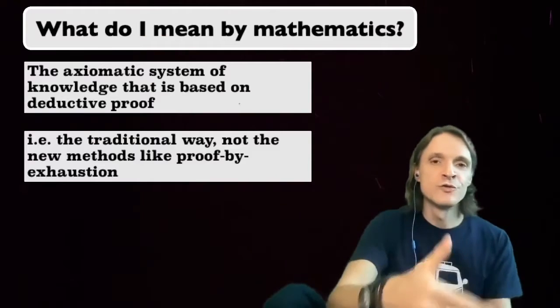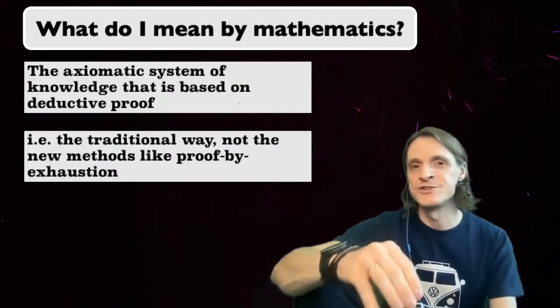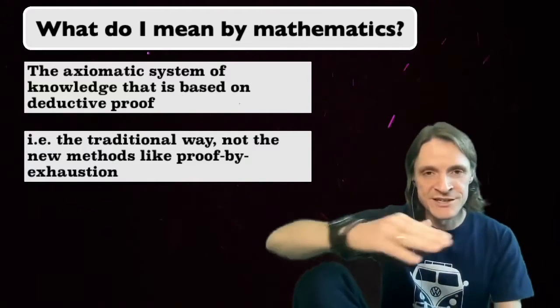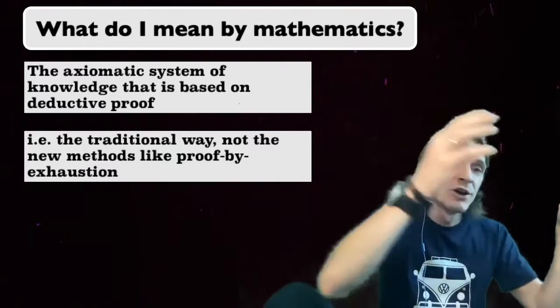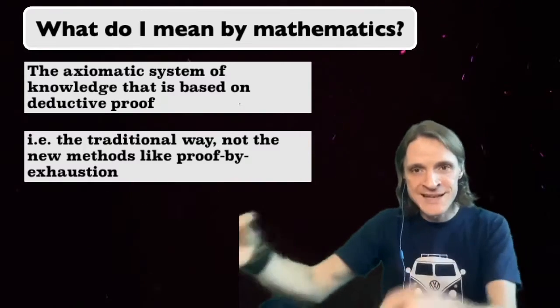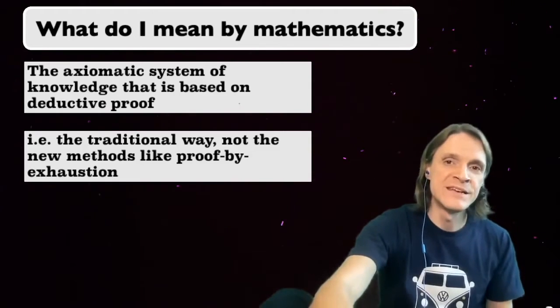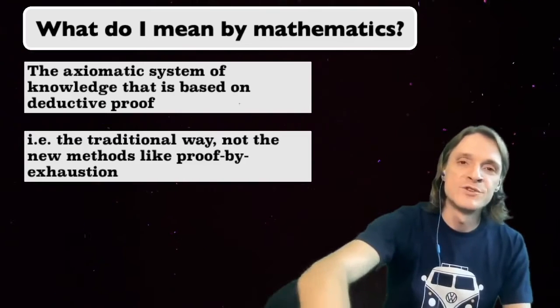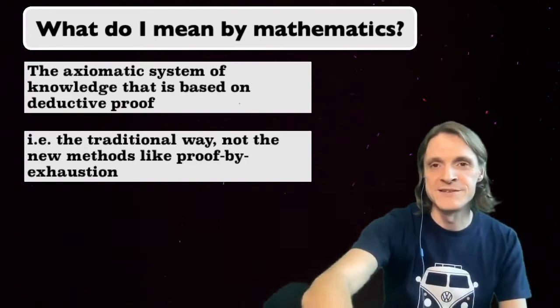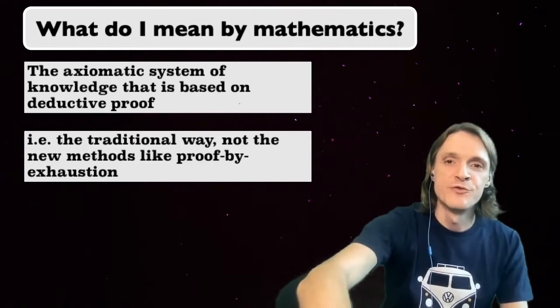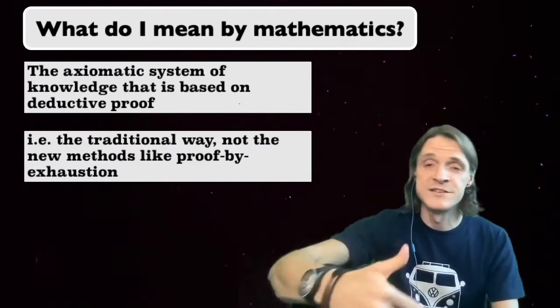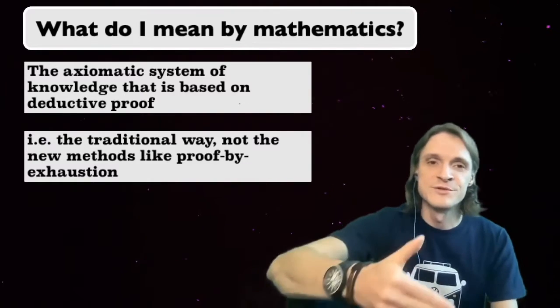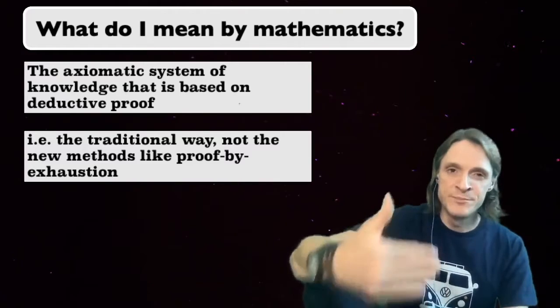You see, there are some new forms of mathematical knowledge that emerged recently, such as computer-assisted proofs or proof by exhaustion, where instead of constructing a deductive proof that shows how a theorem follows from previously proven axioms, we make a computer algorithm that basically sifts through all possible scenarios one by one. There is no proof involved in such a case, it's just a brute force approach. Proof by exhaustion has had a hard time being accepted as part of mathematics, precisely because it goes against the fundamental principles on which mathematics has been built for centuries.